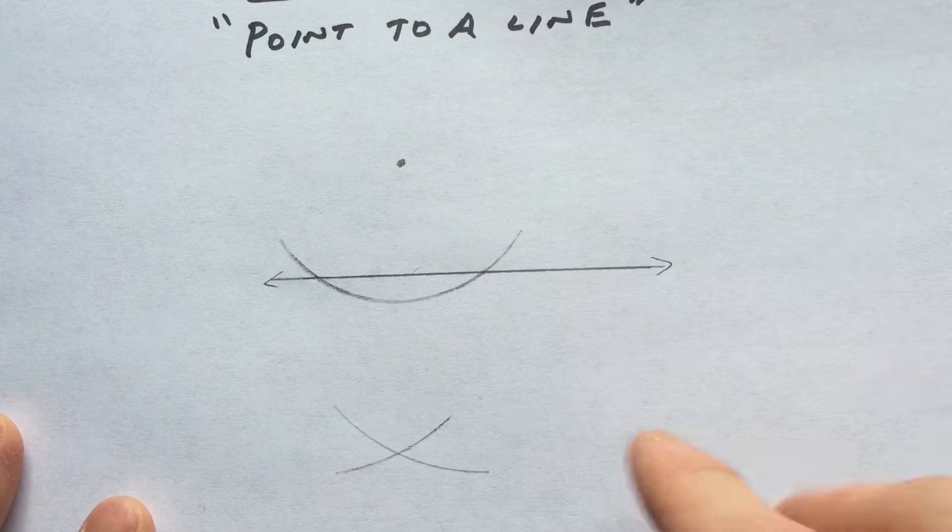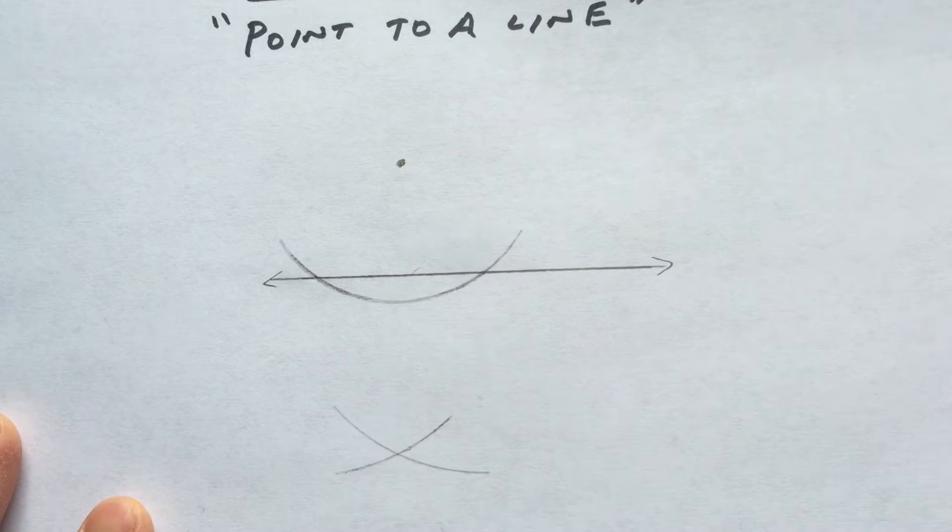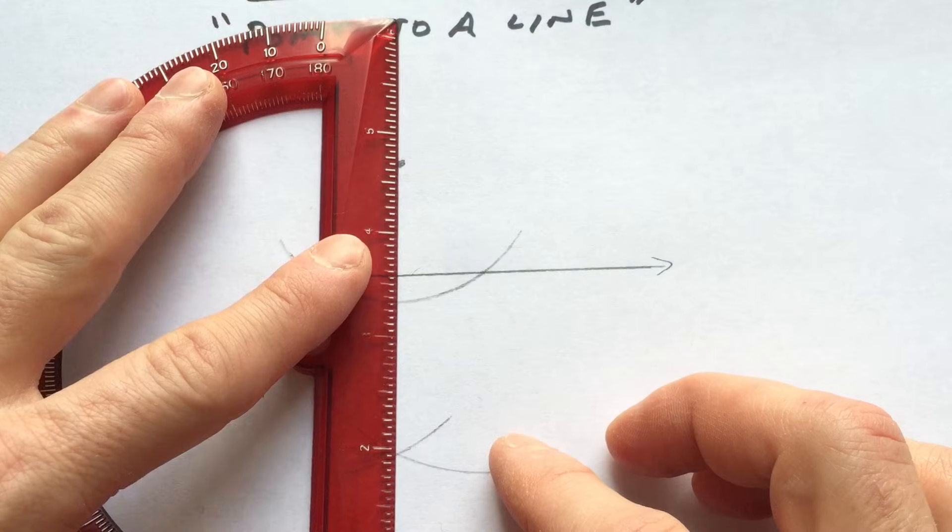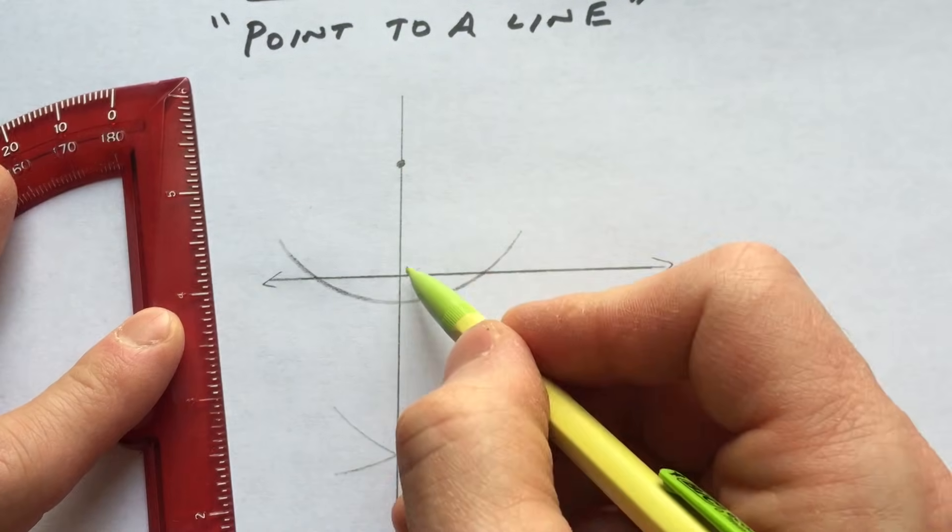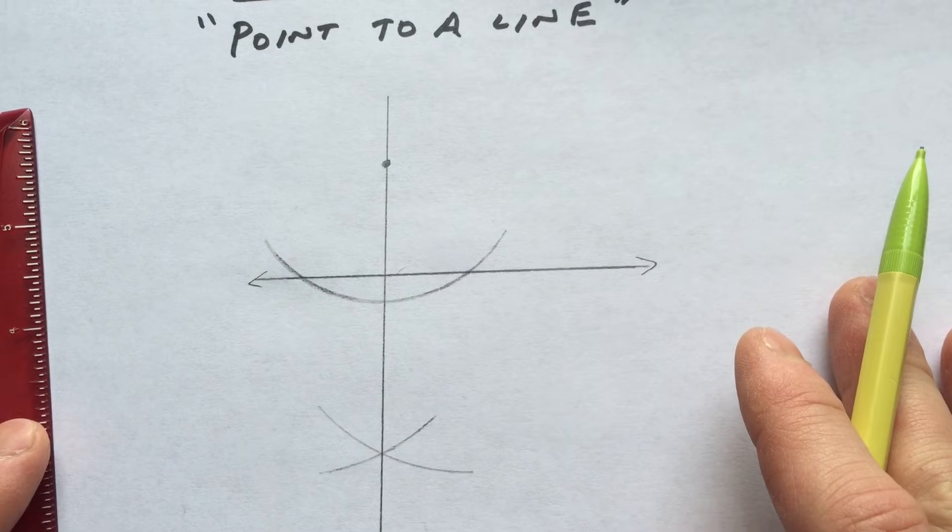And then what we're going to do is we're going to draw a line that goes through this point and this point. So let's go ahead and do that. Now you can see,